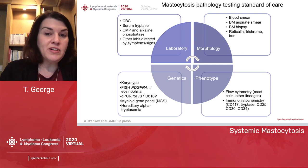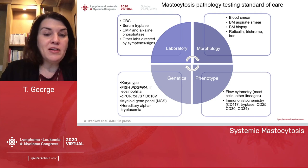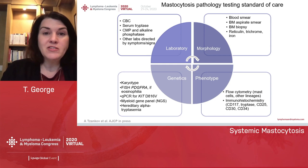Genetics are very key. You want a karyotype, FISH for PDGFR-alpha if the patient has eosinophilia, quantitative PCR for KIT-D816V in the bone marrow, and a myeloid gene panel if you suspect advanced or smoldering systemic mastocytosis. You may also need to check for hereditary alpha-tryptasemia. So it's quite a workup.